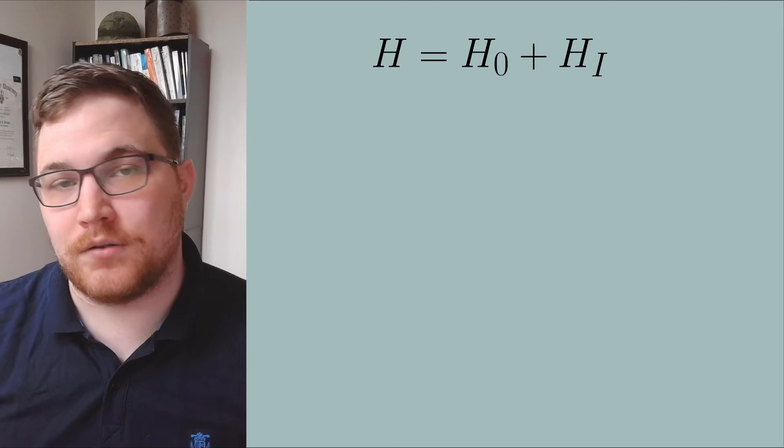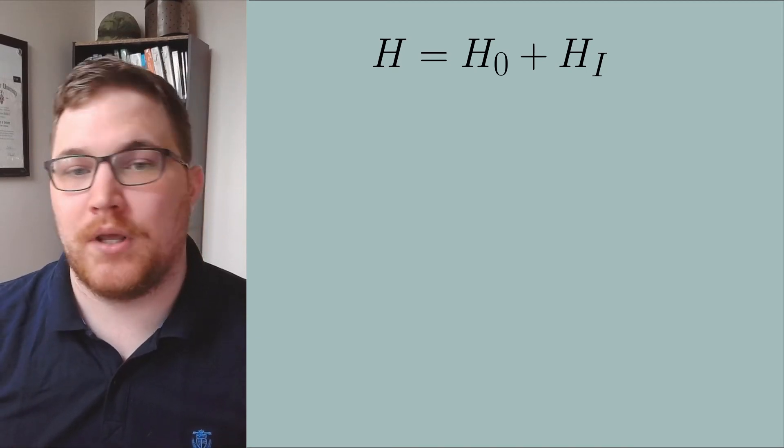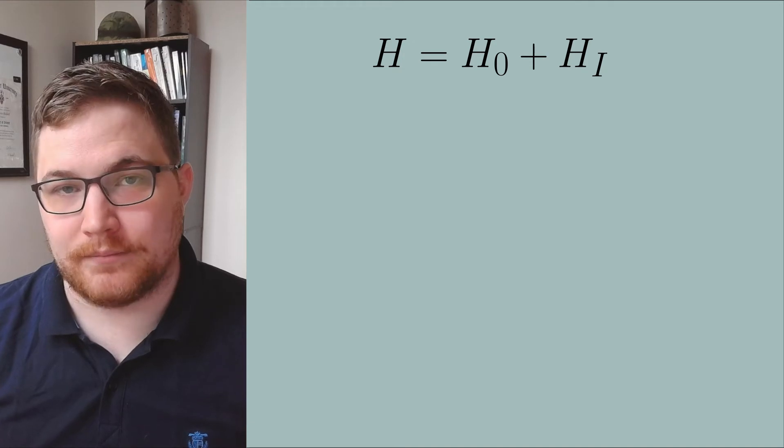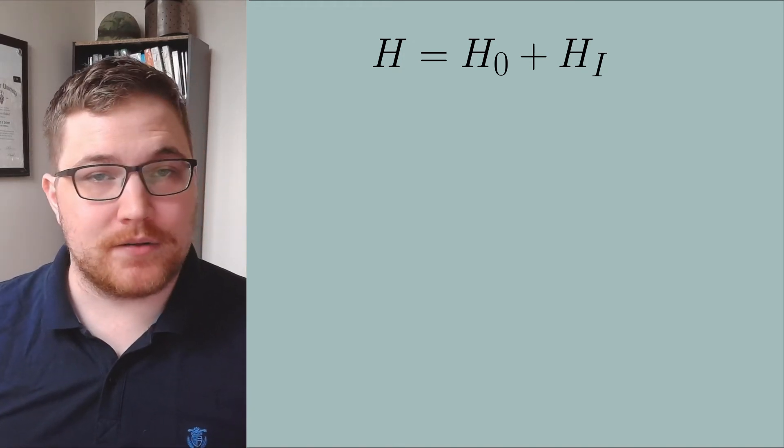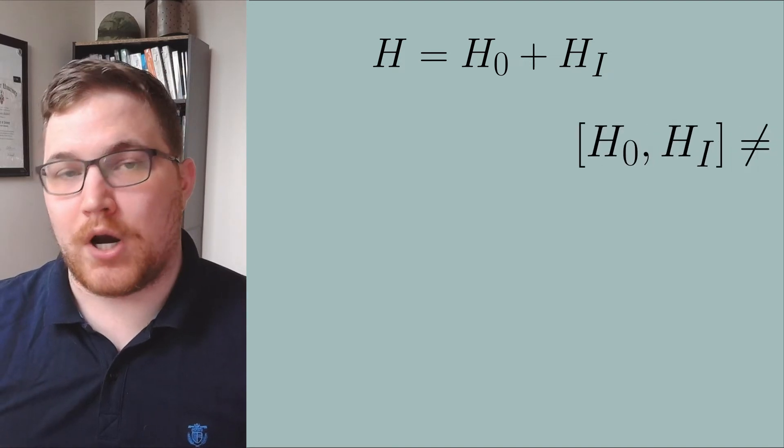So now we have the two basic pictures of the Schrödinger picture and the Heisenberg picture. Let's move on to the interaction picture. Suppose we have a Hamiltonian made up of two parts, which we will call the free part with a subscript zero and the interacting part with the subscript i. We will assume time independence for the Hamiltonian and that the two terms do not commute.